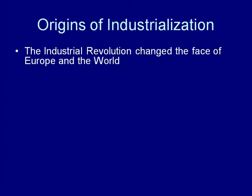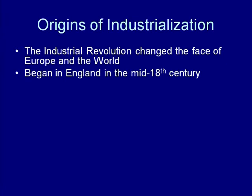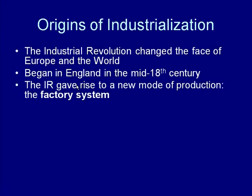So we're going to go back in time to the 18th century when the West, primarily Britain, led the way to industry, and the United States in the 19th century essentially followed along. Industrialization began in England in the mid-18th century and gave rise to a new mode of production — a way in which society produces wealth. In the 18th century, agriculture was the primary mode of production, and the factory grew up alongside it as a new mode.